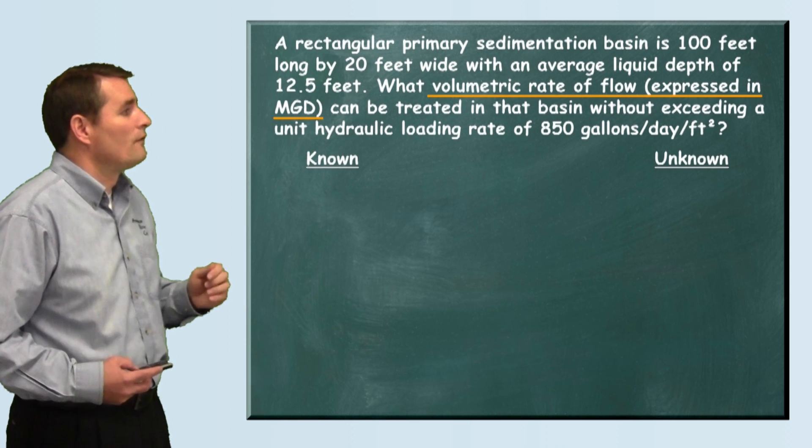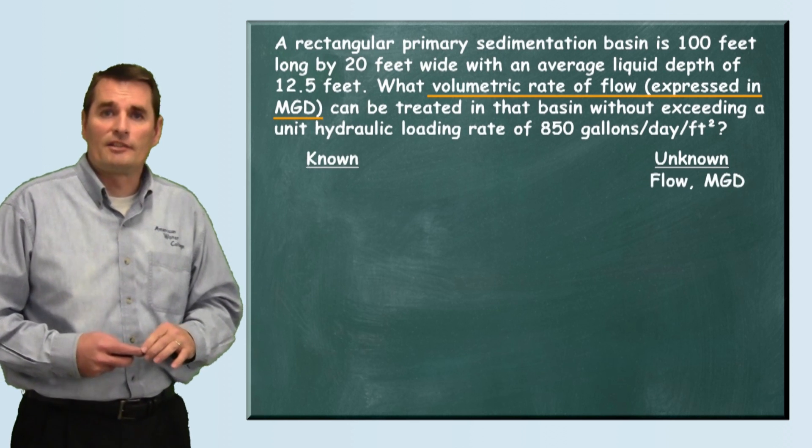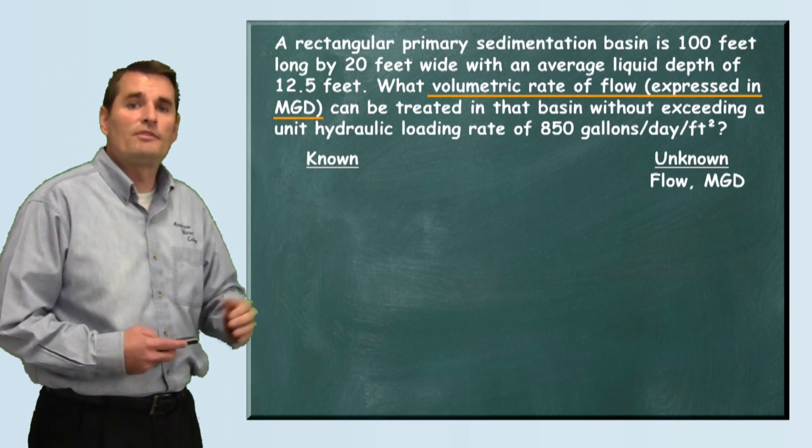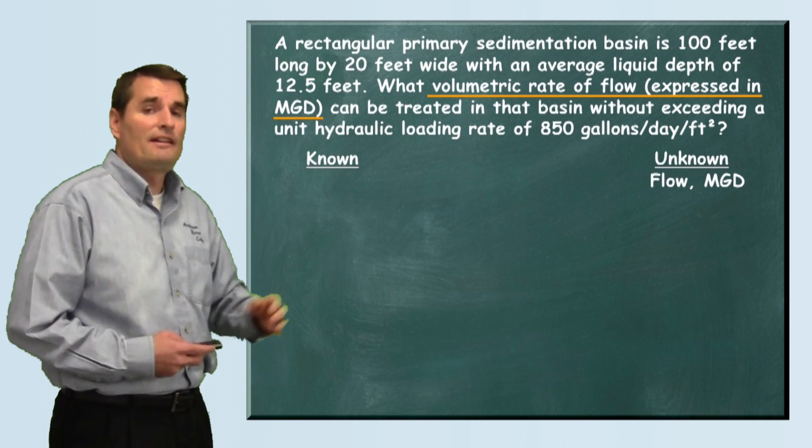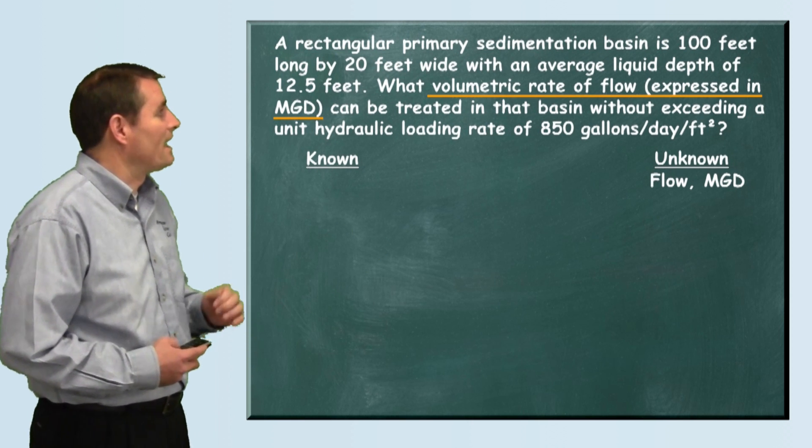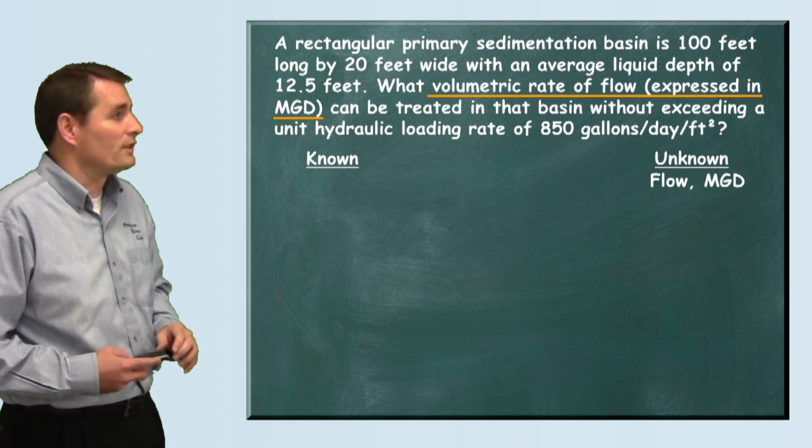We're looking for flow in million gallons per day. What is the maximum flow we can have through the plant without exceeding this 850 gallons per day per square foot of surface area?